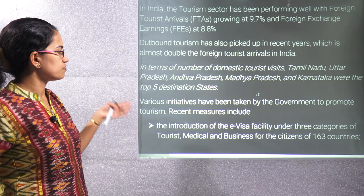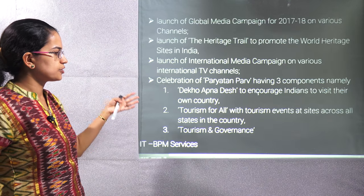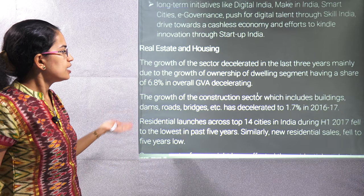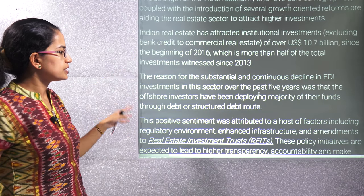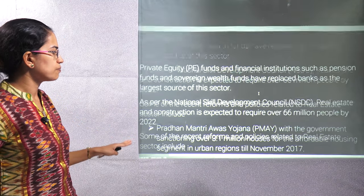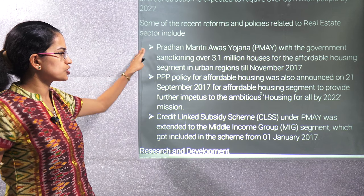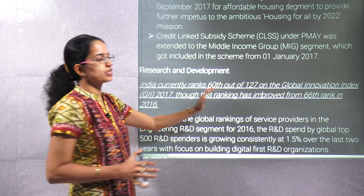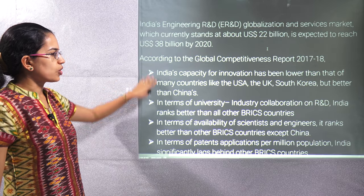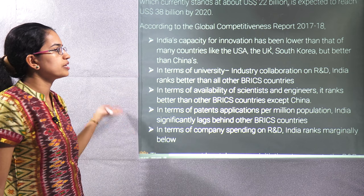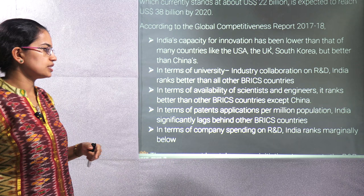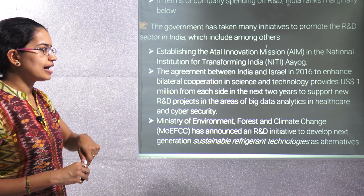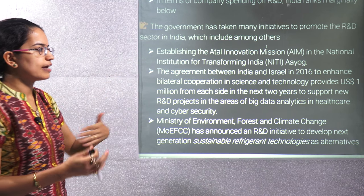Under service sector development: for tourism we have the Heritage Trail, medical tourism, and Dekho Apna Desh scheme. Then there is the IT sector and Business Process Outsourcing units. Under real estate, amendments in Real Estate Investment Trust regulations are very important. Topics include Pradhan Mantri Awas Yojana and the Credit Linked Subsidy Scheme. On research and development, India ranks 60 out of 127 in the Global Innovation Index — very important. We are focusing on industry-university collaboration and patent applications.